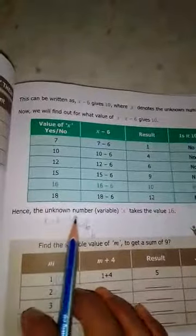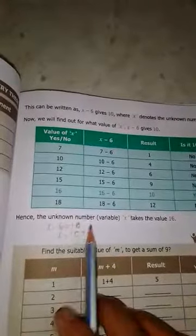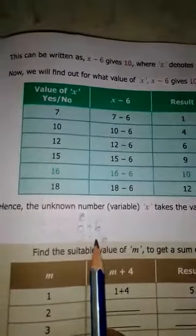Another method: x minus 6 equals 10. To find x value, move the 6 to the right-hand side. Minus 6 becomes plus 6. So x equals 10 plus 6, you get answer 16. This is one method. Suppose you use the table, you can use that way. Otherwise, you can use this method.